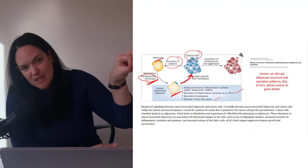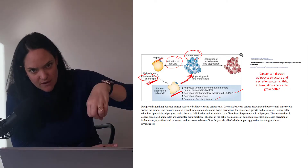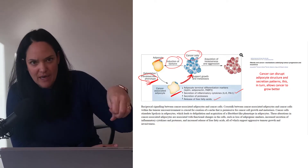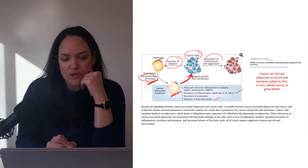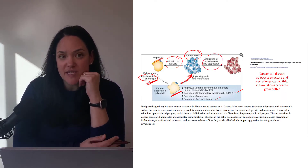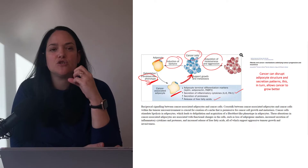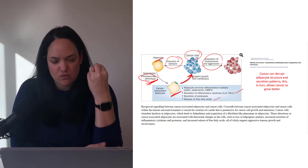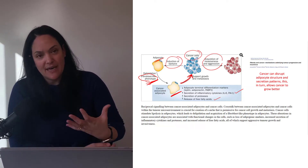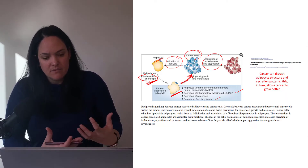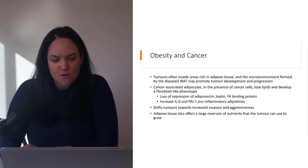It's potentially one of those feedback loops we don't want to see, because it's a reinforcing feedback loop — cancer promotes some of the adipocyte dysfunction we see in obesity, and that adipocyte dysfunction can in turn promote cancer. This might promote more invasiveness — the likelihood of cancer to invade other tissues — and aggression, the rapid growth of cancer.